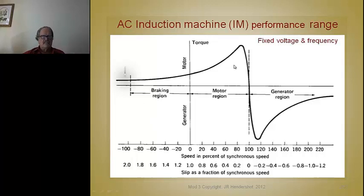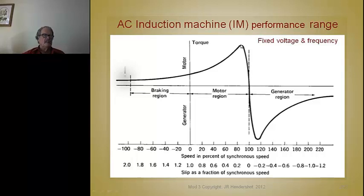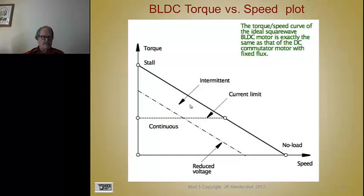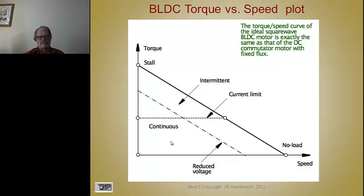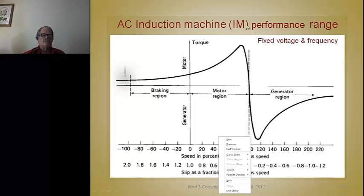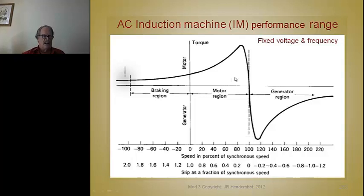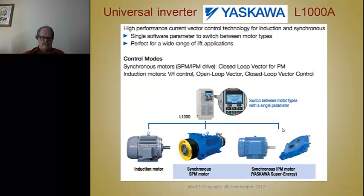Here's an induction machine at constant voltage and frequency — here's its motoring range, generating range, and synchronous speed. To produce torque, I have to load it down so it slows down — you have some slip. Here's the maximum slip; if you try to load beyond that, that's the breakdown torque, so it stalls. That's totally different from the torque-speed curve of a brushless, synchronous, or DC machine. The trick is to use the controller — control the magnetizing current and the frequency — so I can convert this torque-speed curve into a shape that looks like the DC/brushless curve.